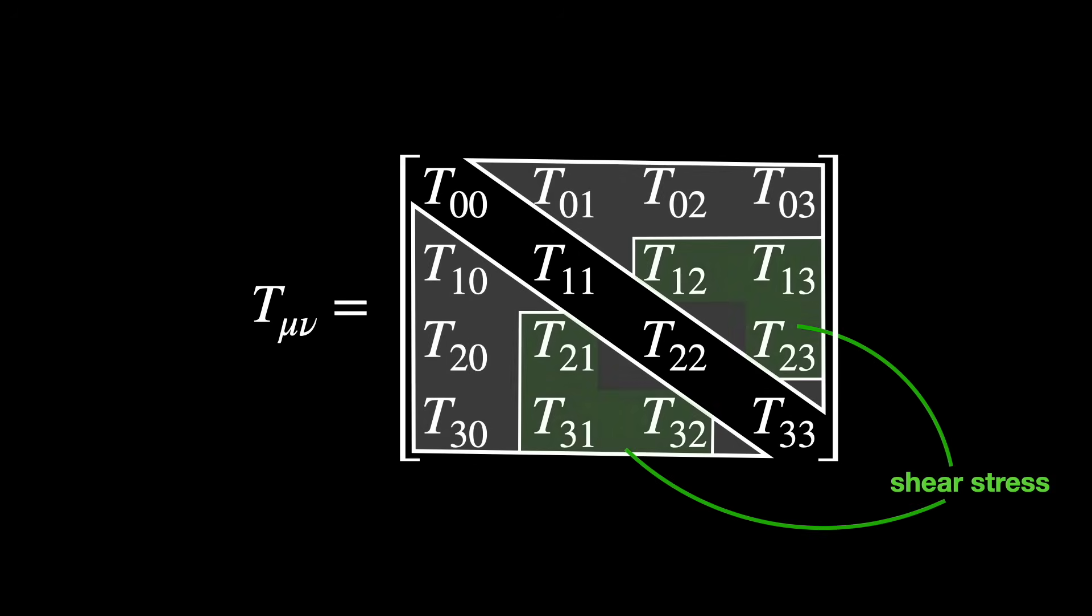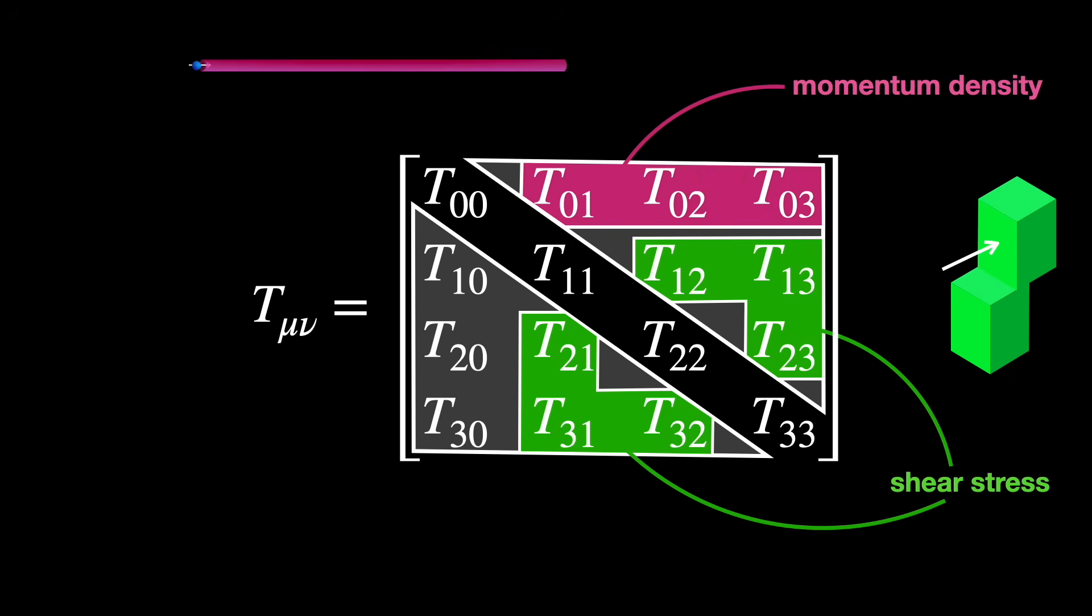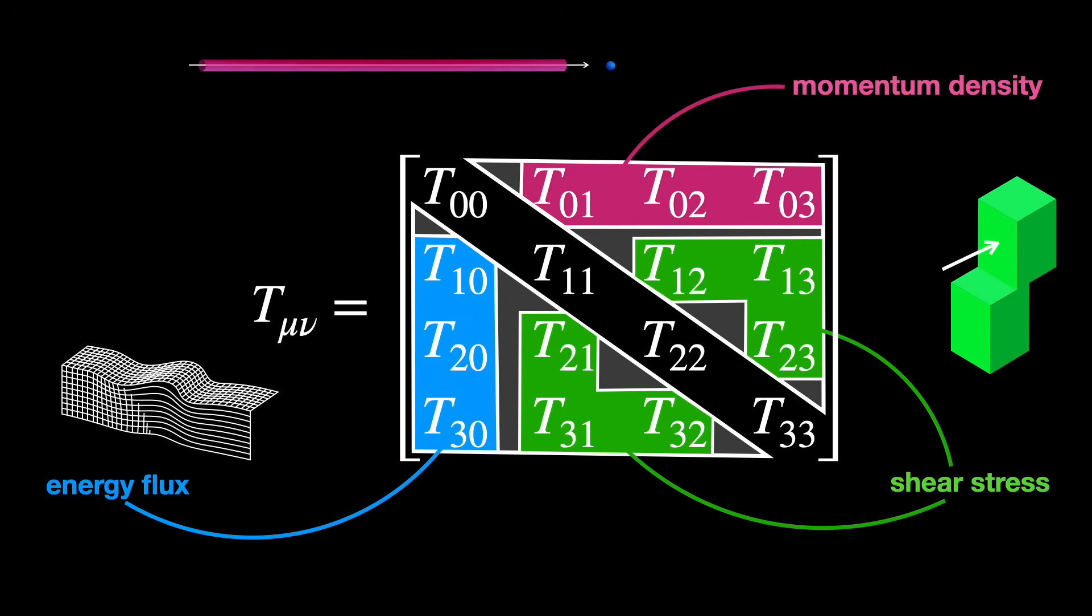These components encode information about shear stress, which tells us how the motion in one direction affects neighboring layers. These components represent momentum density in each direction. Think of it as the amount of push from either matter or radiation contained within a tiny volume of space and in a specific direction. And these give us the energy flux, so in other words, how much energy is moving through space in each direction.